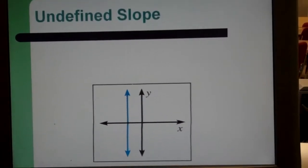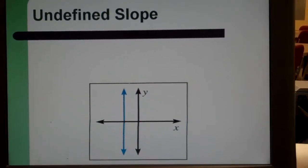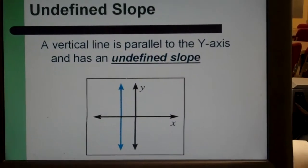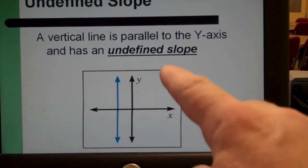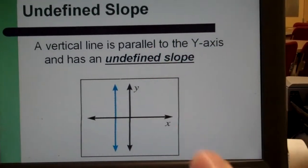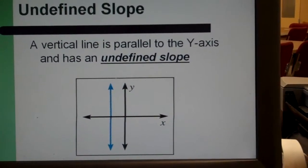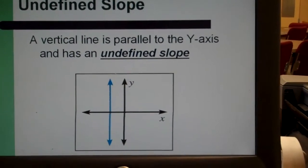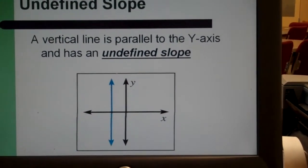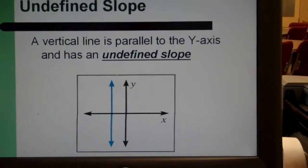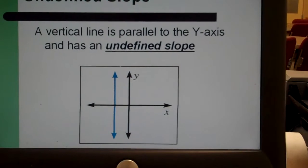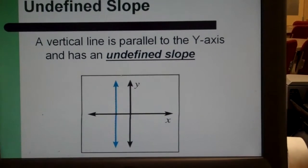Finally, we come to the undefined slope. This is a line that is vertical, parallel to that y-axis. It goes straight up and down. And so it doesn't matter how far up you go or how far down you go. You're going over zero. And as we all should remember, you can't have zero in the denominator of a fraction. That's undefined.